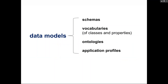First, a word about terminology. When I speak about data models, I mean things like schemas, vocabularies — the kind of vocabularies that consist of classes and properties, like Dublin Core. Also, ontologies and application profiles are a special kind of data model that tries to reuse other people's schemas or vocabularies. These are all data models to me. I'm taking a big picture perspective.